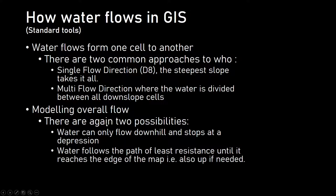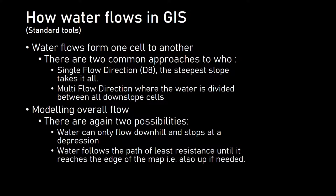There are two possibilities. Water can flow downhill until it meets a depression, and then it stops there — water can't go further. That's the standard version. There's also a version where the water follows the path of least resistance until it reaches the edge of the map. If it can go downhill, fine; if it can go steeply downhill, better; if it has to go uphill, it will do that. This is a bit of a strange one — it will allow water to flow uphill if it doesn't have any other possibilities. You have to be aware of this peculiar element in this approach, but it has some advantages.